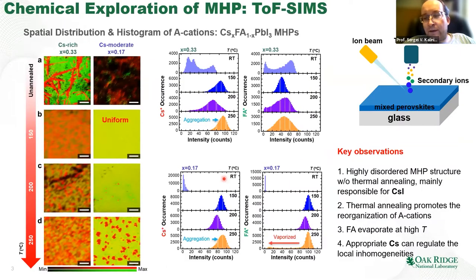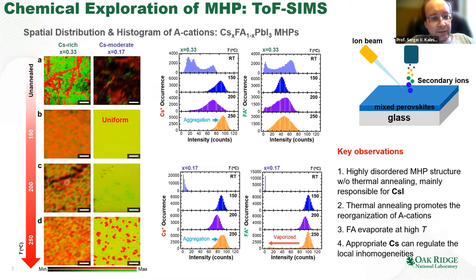Our colleagues at the University of Tennessee have been studying them for quite a while. They have a classical program synthesizing the films, and a high-throughput synthesis where basically a robot synthesizes these materials. Once they make the films, they study their chemical homogeneity. For example, if you take a film of cesium–formamidinium lead iodide and anneal it at different temperatures, you get a map of the chemical distribution inside the material. You can see that the perovskite is very inhomogeneous, and depending on how much cesium you put in the system, the phase separation and chemical inhomogeneity is different.